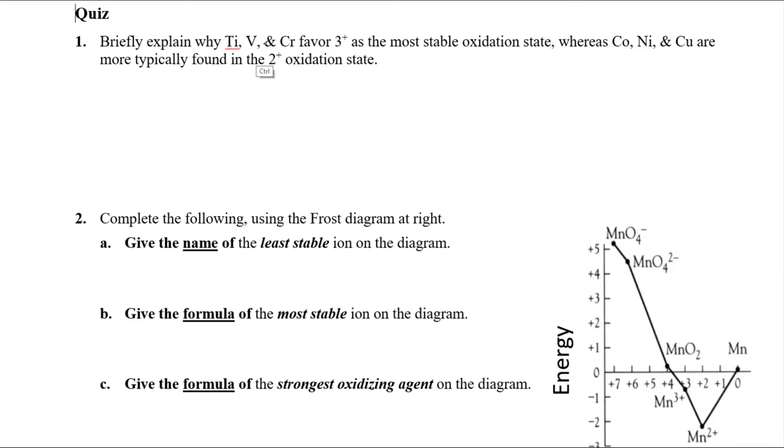These early transition metals favor the 3+ oxidation state, while cobalt, nickel, and copper favor only the 2+ oxidation state. When you look at this, you have to say, what's going on here? 3+ versus 2+ means energetically it's more stable to only remove two electrons rather than three.